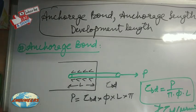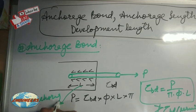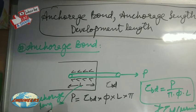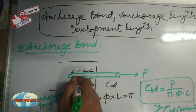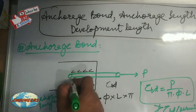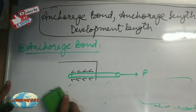What is anchorage length? The length of the bar required to transfer the force in the bar to the surrounding concrete through bond is called anchorage length. So this embedded length will be called simply anchorage length. We have now discussed what anchorage bond is and what anchorage length is.